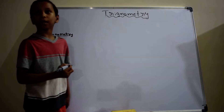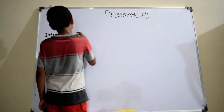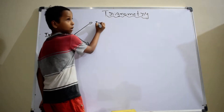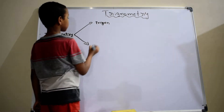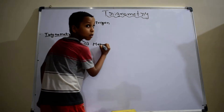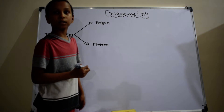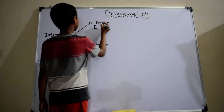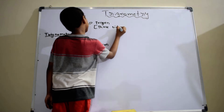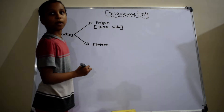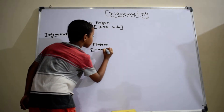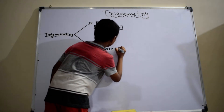Trigonometry can be split into two terms. The first term is Trigon, and the second term is Metron. Trigon means three sides. Metron means measurement.